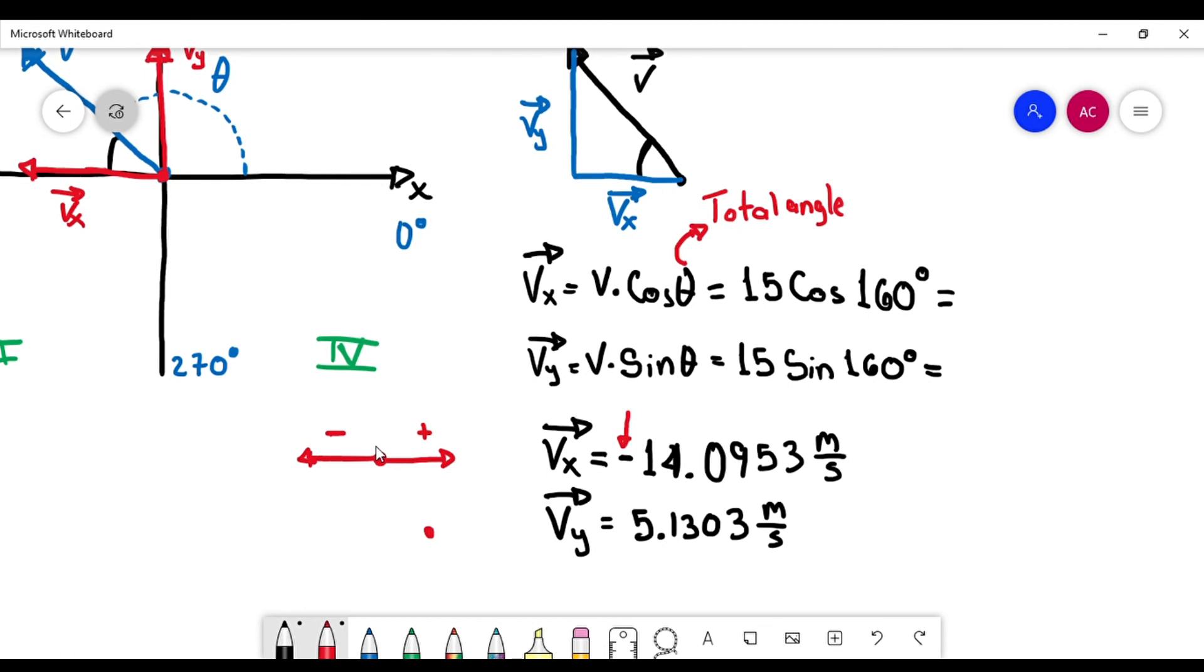Now, it happens the same thing with Vy. If Vy is positive, that means that goes upwards. Vy negative goes downwards. So remember, the number itself is just the magnitude. And the sign of the number is the direction.